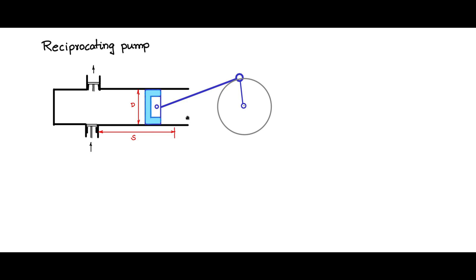This would be the stroke length. If you take that, this piston moves from here to here. So this volume keeps changing.